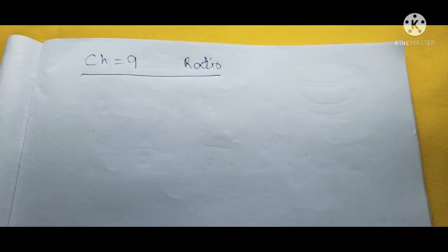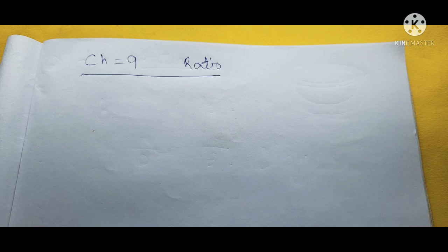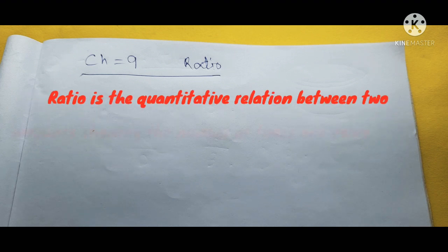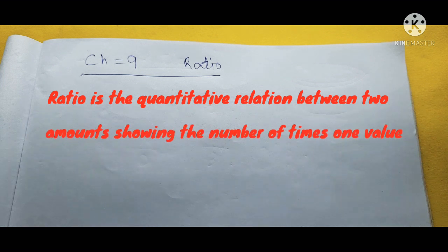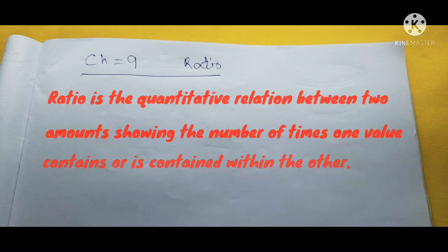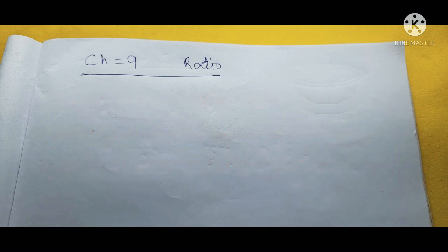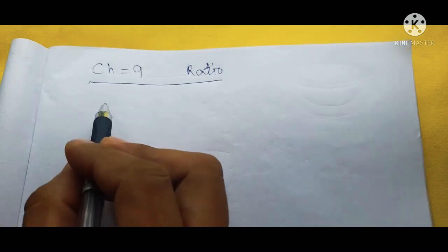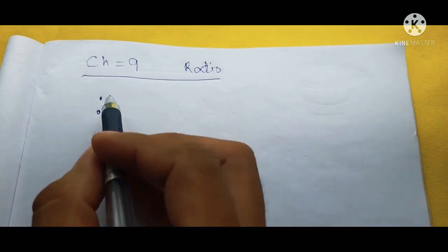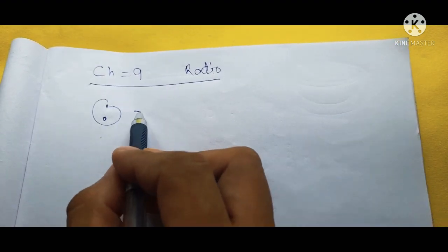Hello students, today we are going to start chapter 9: ratio. So before we start that chapter, let me explain to you what is ratio. Ratio is the quantitative relation between two amounts showing the number of times one value is contained or is to contain within the other. We use this symbol for ratio, and it is also called 'is to'.